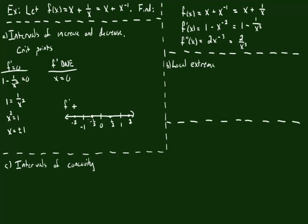We put positive 1 half in here and the same thing happens — we get something negative. And if we put 2 in, we end up getting something positive. So putting all of those numbers into the derivative tells us where the derivative is positive or negative across each interval.